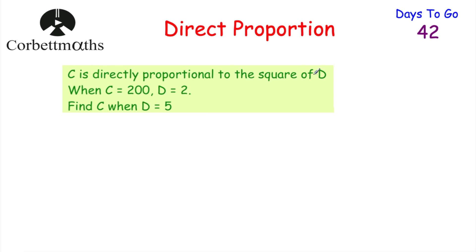So we've got: C is directly proportional to the square of D. Let's write that down using the proportional symbol — some of my students call it 'fishy' but it's the proportion symbol. So C is proportional to D squared. We read this as C is directly proportional to D squared. Now, whenever we're dealing with a proportion question, we want to get rid of the proportion symbol and put in K, the constant of proportionality.